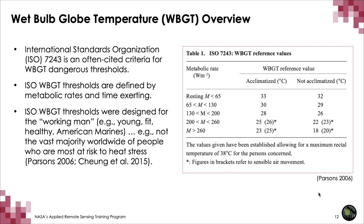Wet bulb globe temperatures are usually referenced for both acclimated and non-acclimated folks at different metabolic rates, to define thresholds when activities should be stopped or when resting should be implemented. The ISO reference 7243 is often cited in the academic literature and by policymakers for thresholds dangerous to human health. I want to emphasize that these thresholds were designed for the 'working man' — generally young, fit, healthy American Marines — who are not the vast majority of people at most risk for heat stress. For most people, especially those with pre-existing conditions or from vulnerable populations, lower thresholds may be more appropriate.